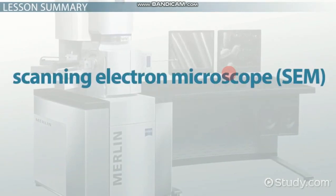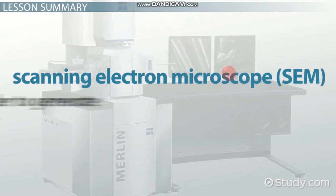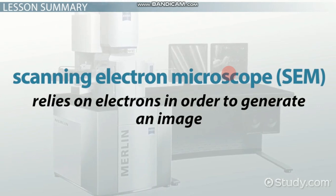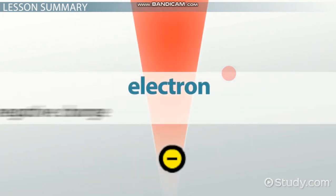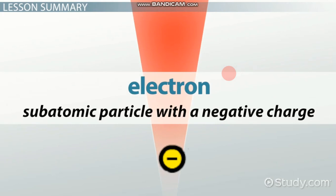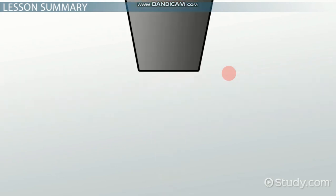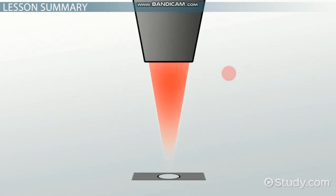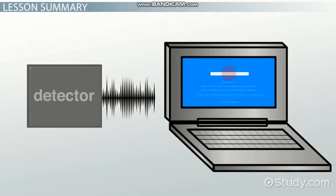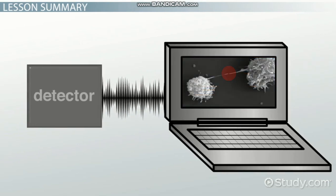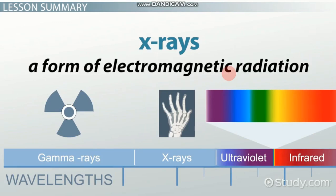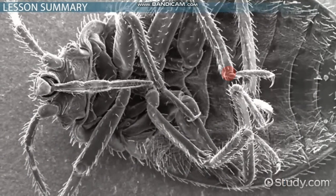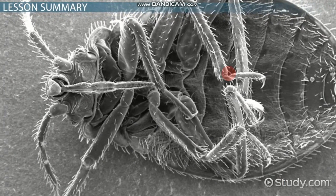In summary, a scanning electron microscope, or SEM, is a type of microscope that relies on tiny particles called electrons in order to generate an image. An electron is a very light subatomic particle with a negative charge. A scanning electron microscope uses an electron gun to produce a beam of electrons that travels vertically through electromagnetic lenses towards the sample. Once it hits the sample, the sample discharges electrons as well as X-rays — a form of electromagnetic radiation — which detectors detect and convert into a signal, forming an image of the surface of a sample.